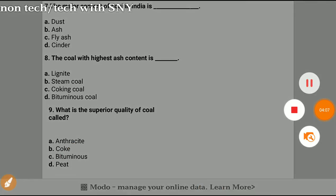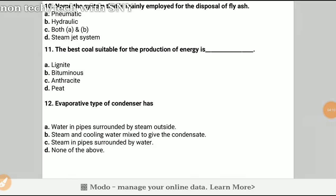The next question, question number 10: Name the system that is mainly employed for the disposal of fly ash. The answer will be pneumatic. Question 11: The best coal suitable for production of energy is? The answer will be C, anthracite. Question 12: Evaporative type of condenser has? The answer will be C, steam in pipes surrounded by water.